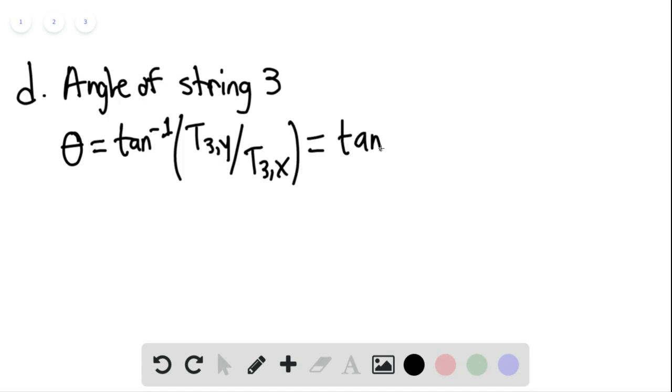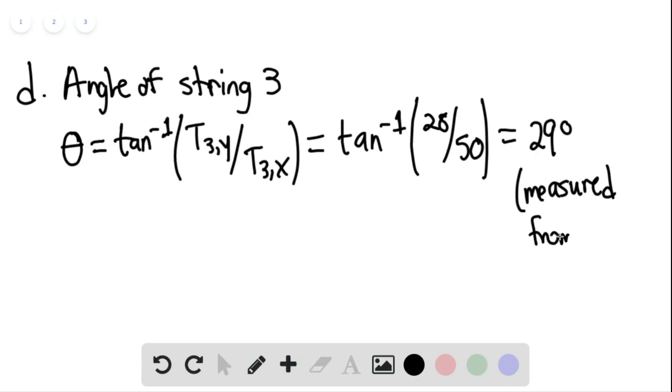And this is going to be equal to arctan of 28 divided by 50. And this is equaling 29 degrees. This would be measured from the vertical axis.